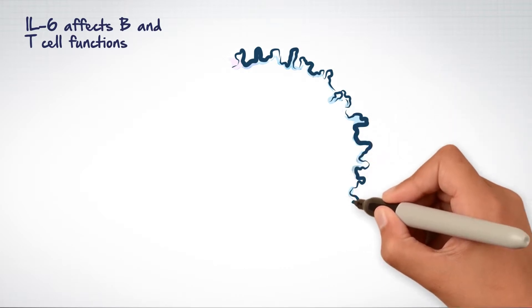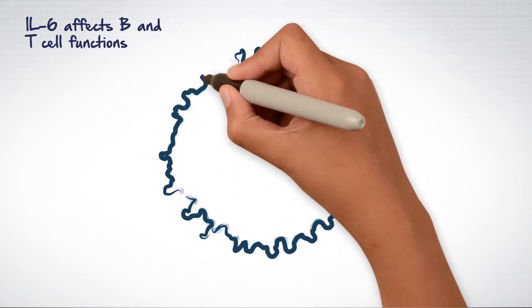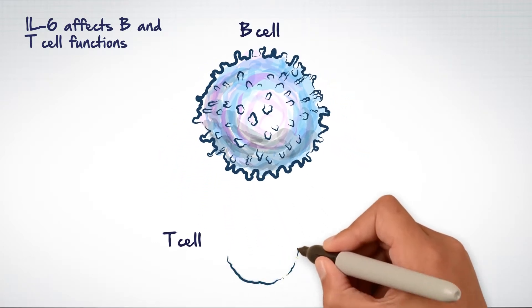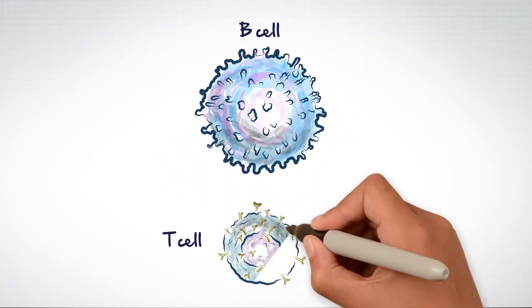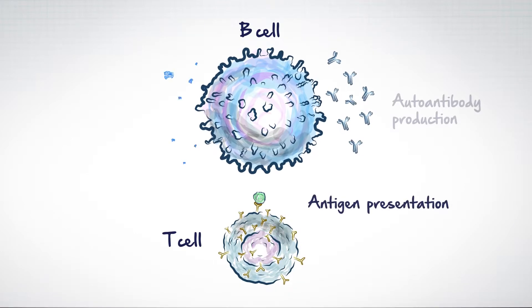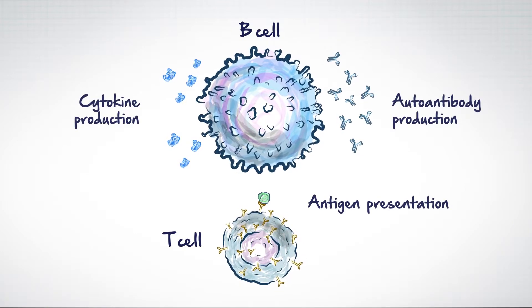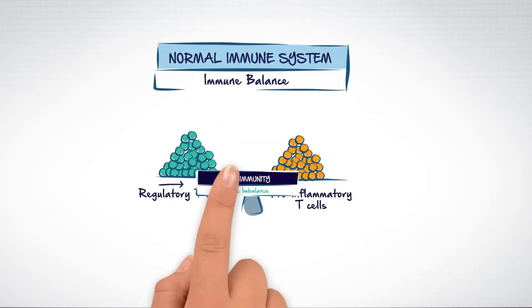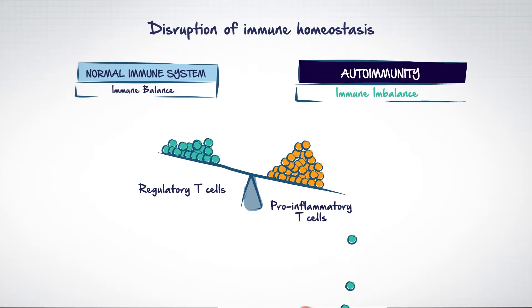IL-6 contributes to RA through its effects on both B and T cell functions. IL-6 stimulates B cells that contribute to the pathogenic process through antigen presentation and autoantibody and cytokine production. Immune homeostasis is disrupted as IL-6 alters the fine ratio between pro-inflammatory and regulatory T cells.